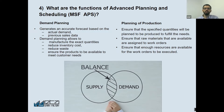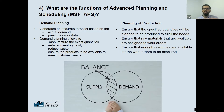Demand planning is to generate an accurate forecast based on the actual demand or based on the previous sales data. APS can import the data of previous years and analyze this data so that it can generate production orders for you.